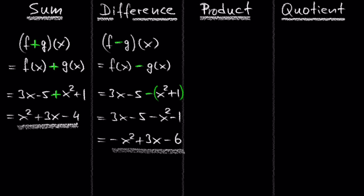Let's look at the product of f and g. The multiplication of two functions is also very simple. All we have to do is write f of x, which is 3x minus 5, and multiply it with g of x, which is x squared plus 1.